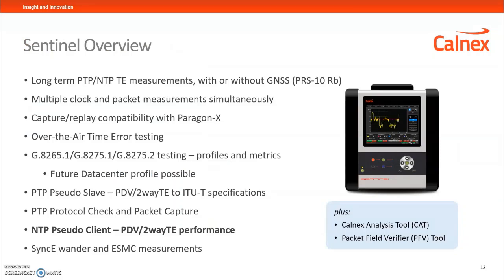Here is a quick overview of the Sentinel features. It is suitable for long-term PTP and NTP time error measurements, with or without GNSS, thanks to the internal rubidium. It supports multi-clock and packet measurements simultaneously — one PPS and packet measurements at the same time. It has capture-replay compatibility with Paragon X, so you can capture the impairment profile on your network and share this with your vendor. The main takeaway from this feature list is the introduction of NTP over IPv6, making this product suitable and unique for the data center market.